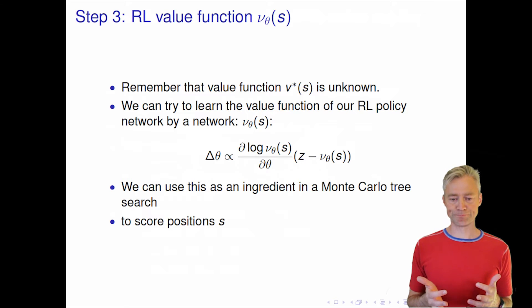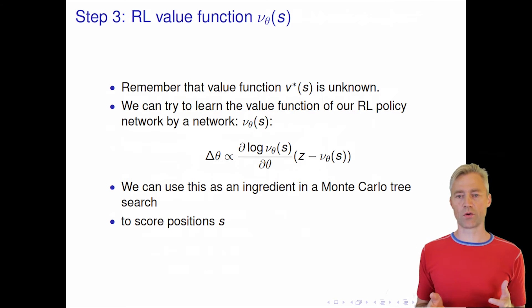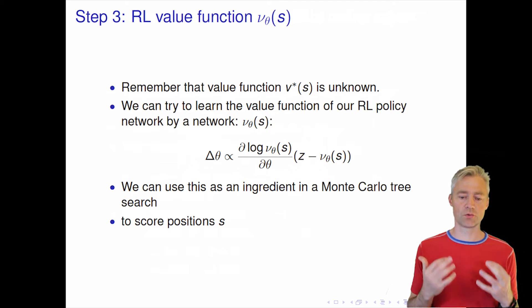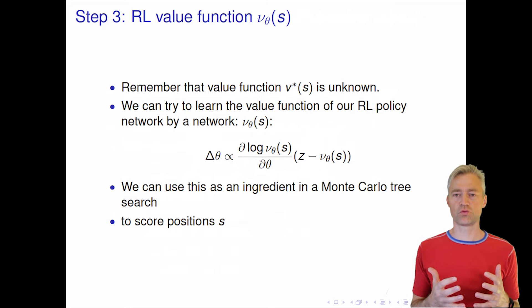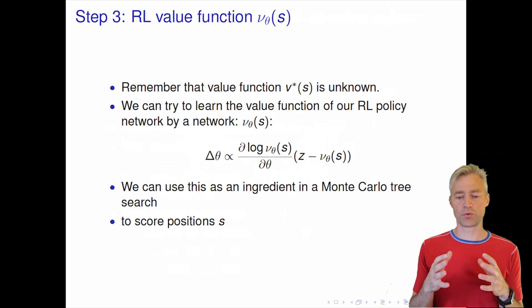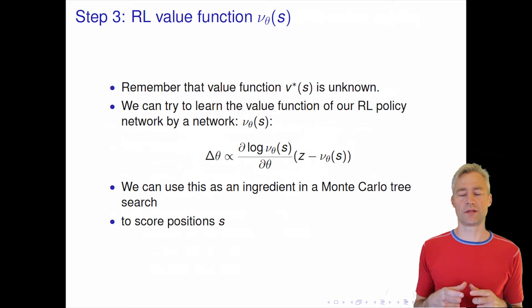We have now our reinforcement learning policy network. It works kind of well. But we can now try to say, can we use some network model to actually find out what is the probability that given that we play with our reinforcement learning policy, this will lead to a win against another reinforcement learning policy network? So let's try to build now a third network that estimates this value function.